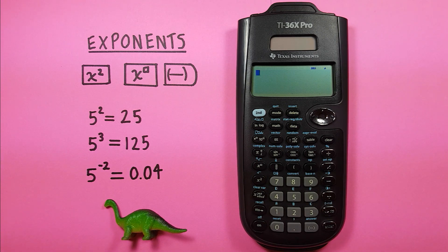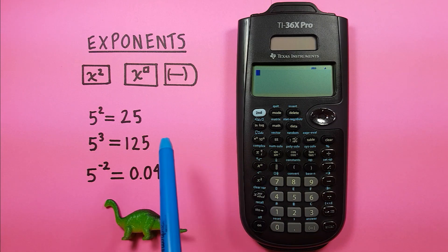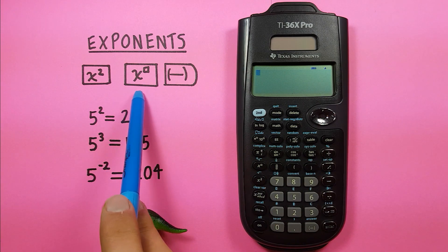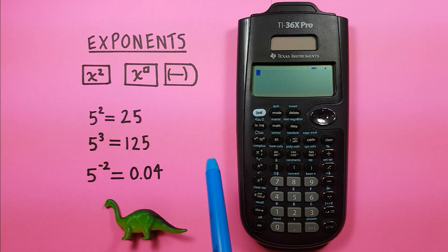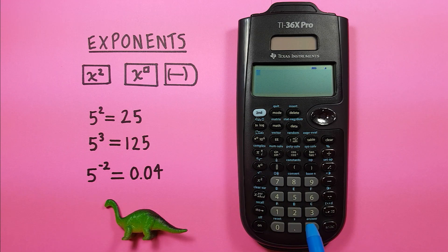To do this we'll be using the x squared key, looks like this, located here. The x exponent or x power key looks like this, located here. And the negative key looks like this and is located down here.